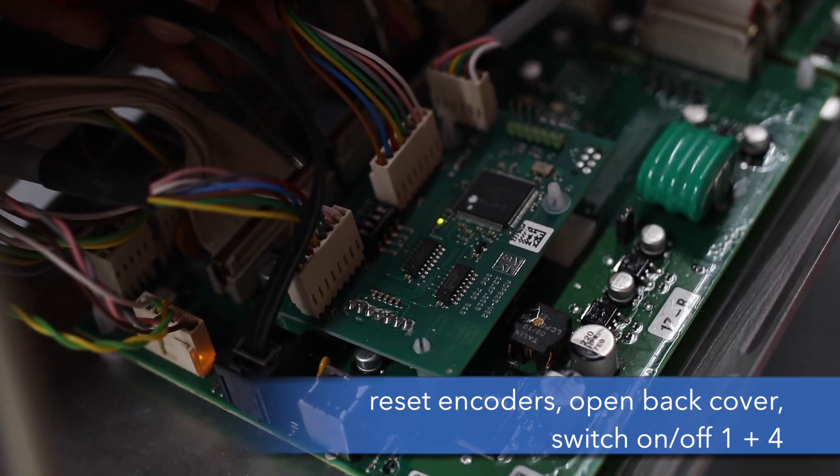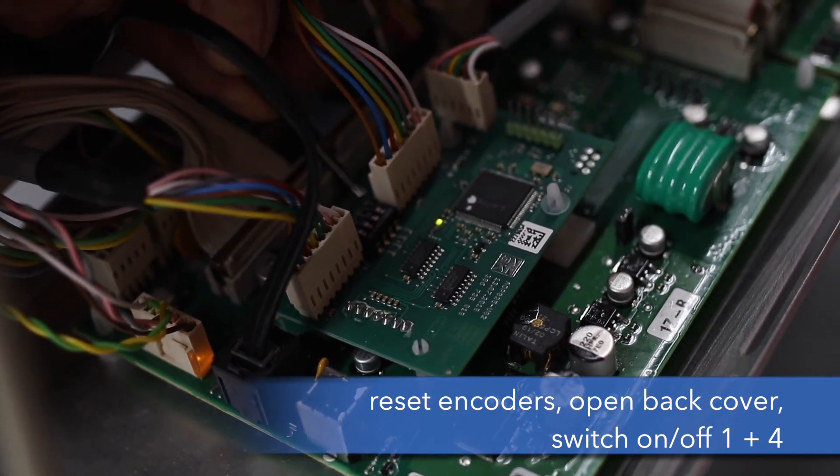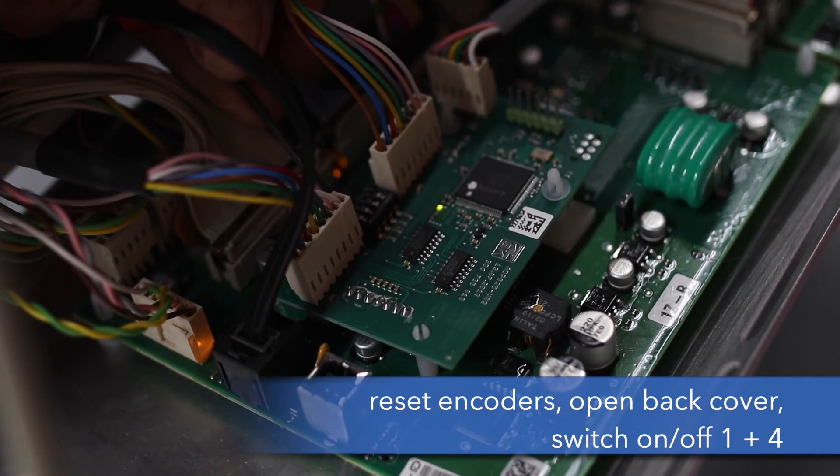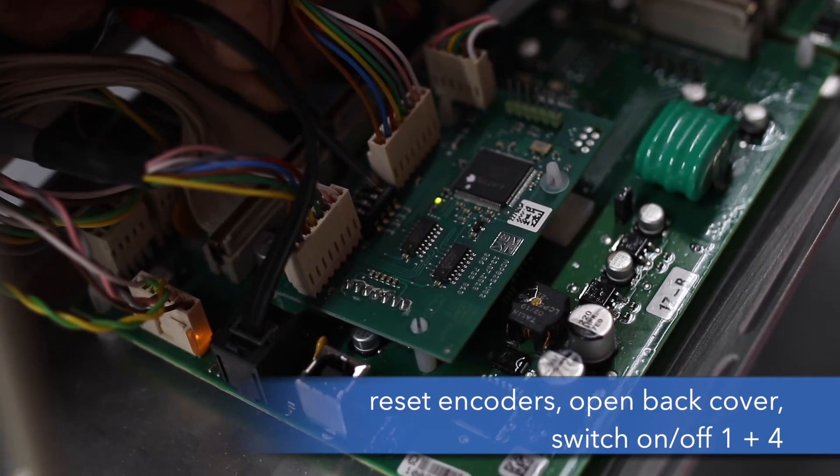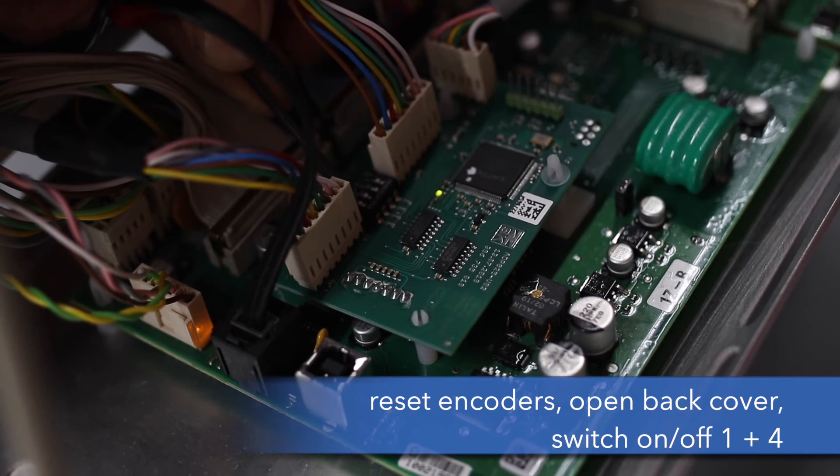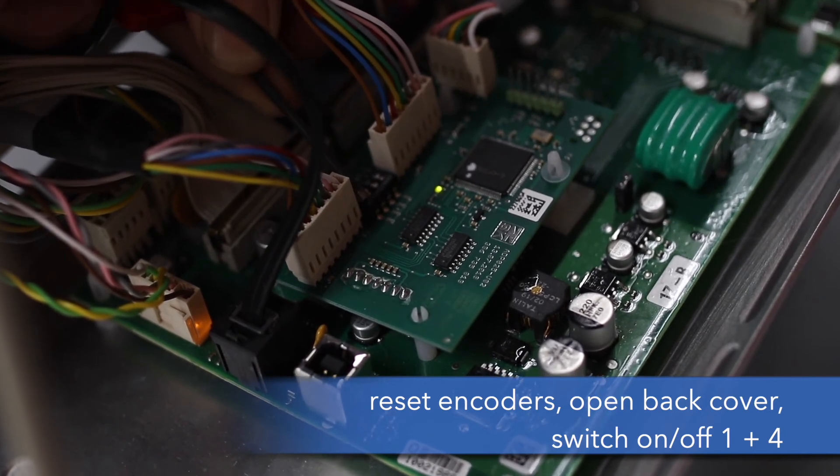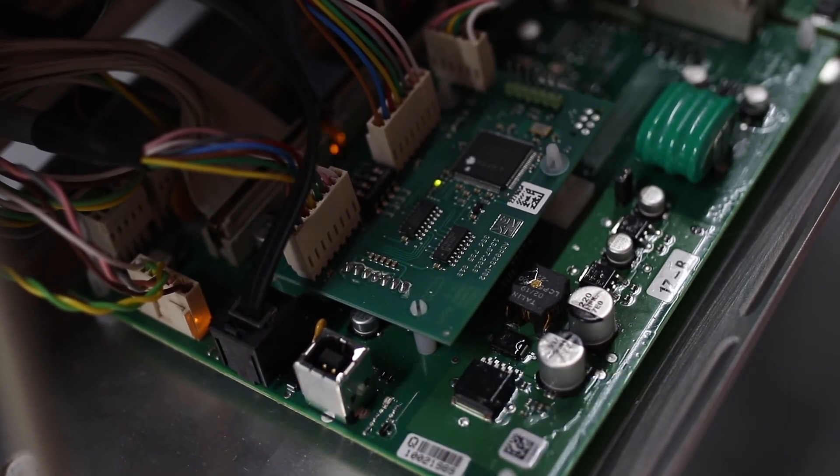To reset the encoders we need to switch off 1 and 4. First we need to switch it on and back off. Now the encoders are reset.